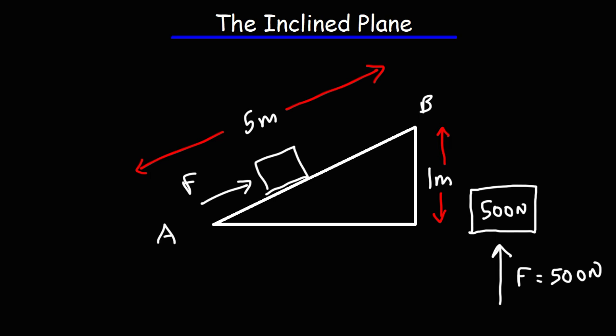So here it's 500, the force that we need here is going to be 100. So notice what this machine allows us to do. It allows us to move the box up a height of one meter but through another path with a lot less effort.